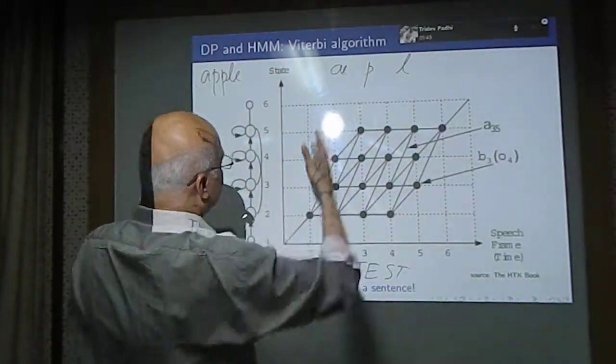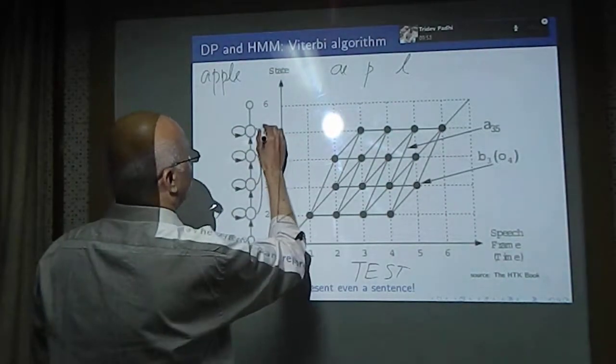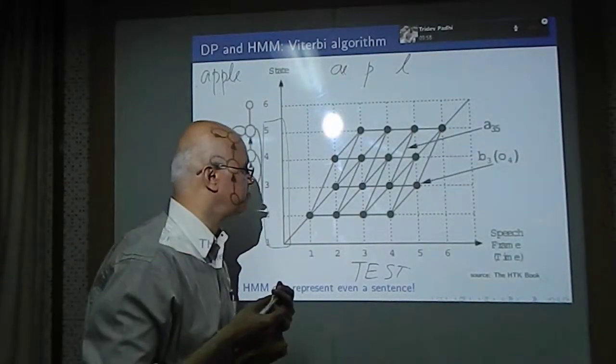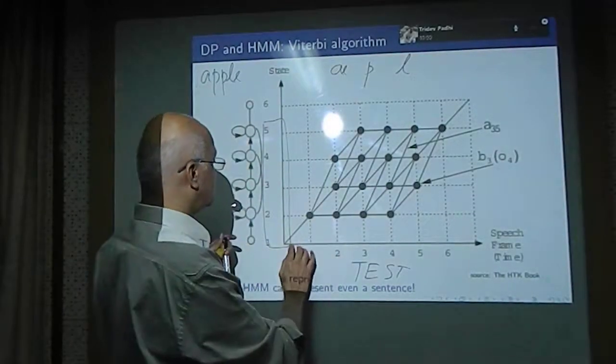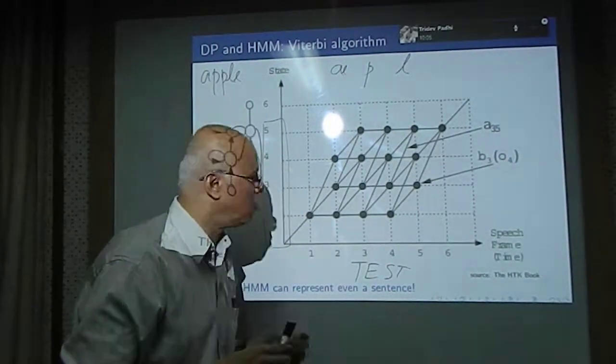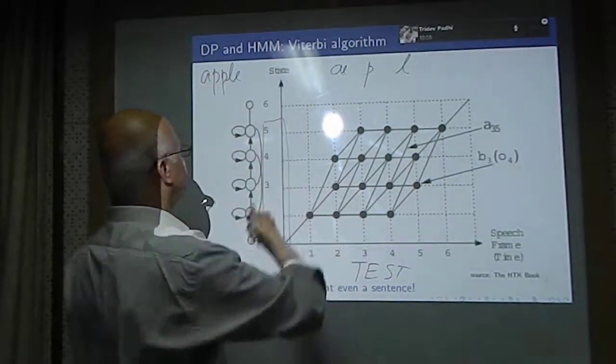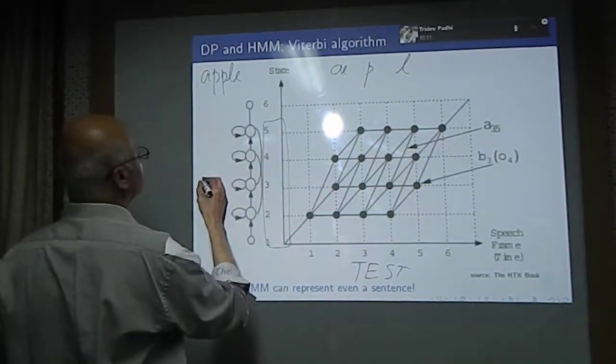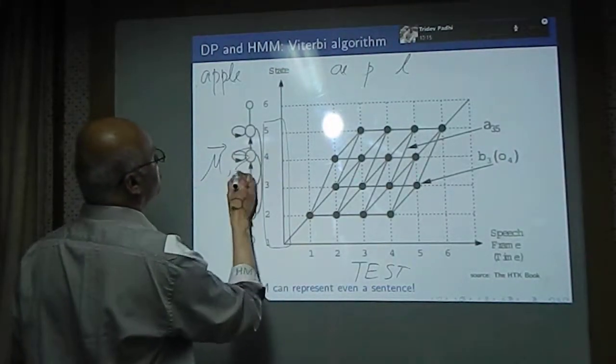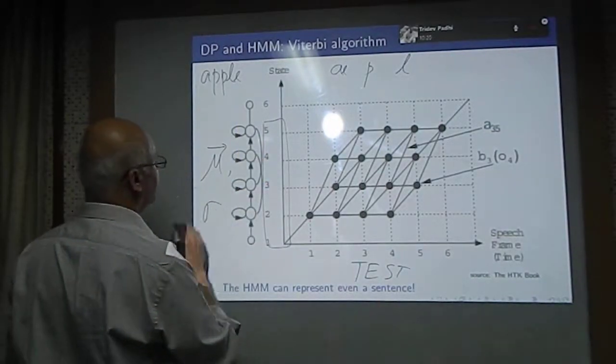The vowel A is several frames long. Let us say the vowel A is five frames long for the sake of illustration. You can store the five feature vectors, or what you can do is take the average of these five feature vectors. You can compute the average, that is the mean vector mu, and you can also compute the corresponding variances or standard deviations.